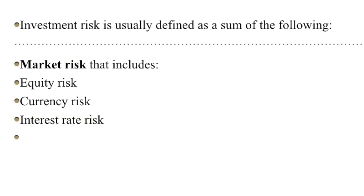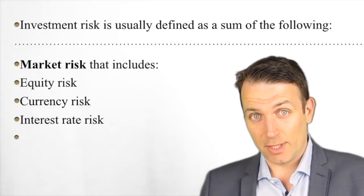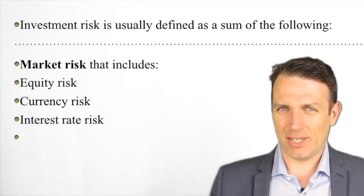The definition of investment risk you learn at school is usually defined as a sum of the following: market risk, which includes equity risk, currency risk, interest rate risk, and then a dozen other factors like liquidity, concentration, credit risk, inflation risk, horizon risk, and so on. All of those things supposedly relate back to market risk, and a general security is also compared to market risk.